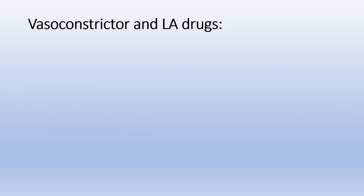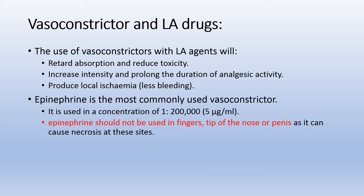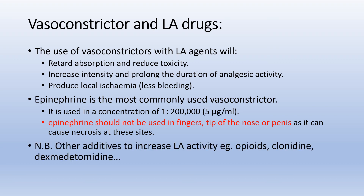The use of a vasoconstrictor with local anesthetic agent will decrease the rate of absorption and reduce toxicity, increase intensity and prolong the duration of analgesic activity, and produce local ischemia resulting in less bleeding in the operating field. Epinephrine is the most commonly used vasoconstrictor, used at a concentration of 1 to 200,000. Epinephrine should not be used in the fingertips, nose, or penis, as it can cause necrosis at these sites. Other additives to local anesthetic that can improve activity include opioids, clonidine, and dexmedetomidine.